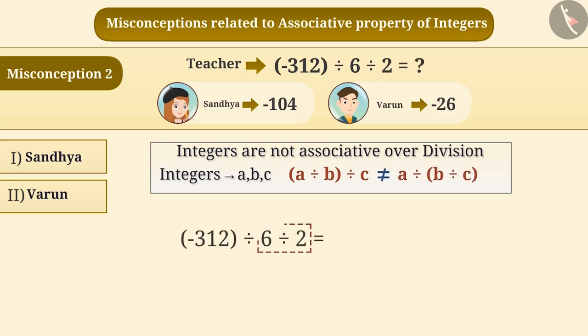They think that it will be easier to divide 6 by 2 instead of dividing minus 312 by 6. That's why they divide 6 by 2 and with the result 3, they divide minus 312. By doing so, the result obtained is minus 104. This is a misunderstanding.